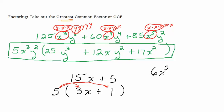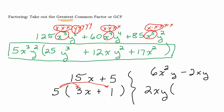Let's do one that's a little more complicated: 6x squared y minus 2xy. What do those two terms have in common? The number that goes into both 6 and 2 is 2. The first term has x squared and the second has x, so the smallest exponent is x to the first. Both terms have a y, so they share a y. Taking 2xy out of the first term: 6 divided by 2 is 3, x squared divided by x leaves x, y divided by y is gone — leaving 3x. For the second term: I had 2xy and I took out 2xy, so that's 2xy divided by 2xy, which equals 1. So the answer is 2xy(3x − 1). Anytime the greatest common factor is exactly the same as a term, you put a 1 there because you're dividing something by itself.